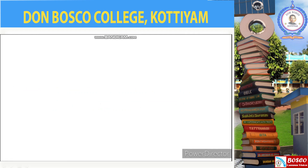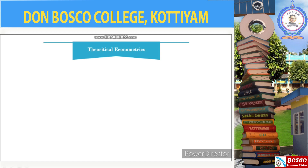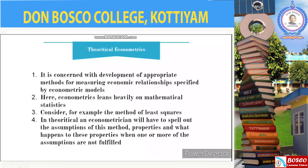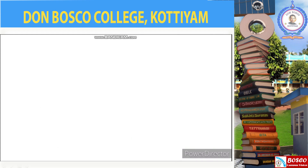We will start with the first division: theoretical econometrics. Theoretical econometrics is concerned with the development of appropriate methods for measuring economic relationships specified by econometric models. In this aspect, econometrics leans heavily on mathematical statistics. Take, for example, the method of least squares — in theoretical econometrics, the econometrician must spell out the assumptions of this method, its properties, and what happens to these properties when one or more of the assumptions are not fulfilled.